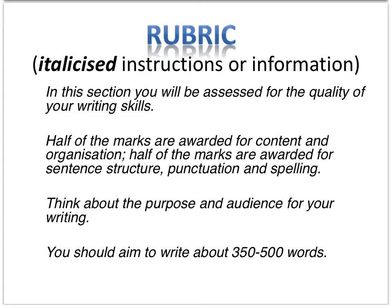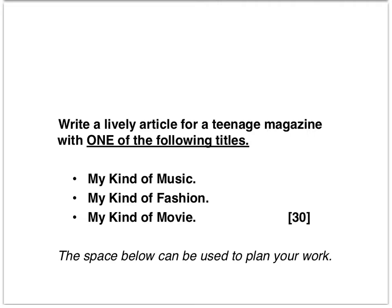You'll also notice the phrase purpose and audience. Purpose and audience, along with format and tone, are crucial and must be suitable for the task set. You'll also notice that it asks you to write between 350 and 500 words, which is roughly about one and a half to two sides of your answer booklet, depending on the size of your writing. Do not waste time counting words — most students will write about 250 words per A4 side. In this particular paper, students were asked to write a lively article for a teenage magazine with one of the following titles: My Kind of Music, My Kind of Fashion, or My Kind of Movie.